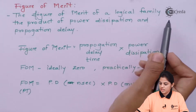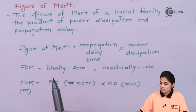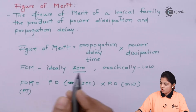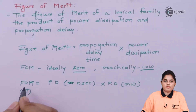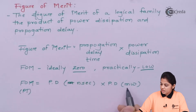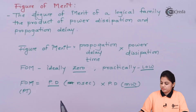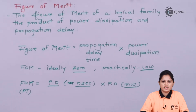The figure of merit of a logic family is the product of power dissipation and propagation delay, which should ideally be zero, but practically it should be as low as possible. Figure of merit is always measured in picojoules, because it is the product of power dissipation measured in milliwatts and propagation delay measured in nanoseconds. The product of these two parameters gives you the figure of merit for that particular device.